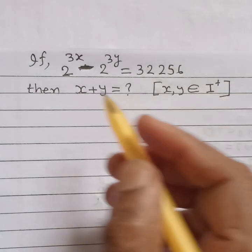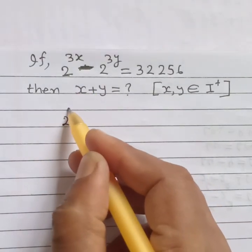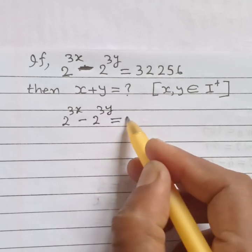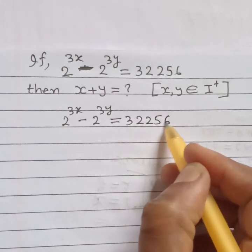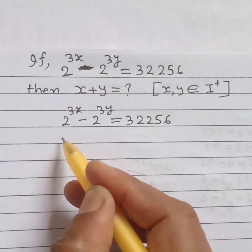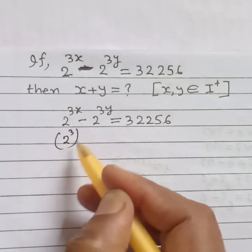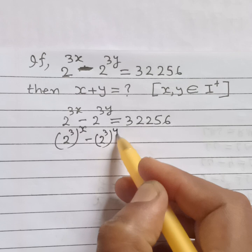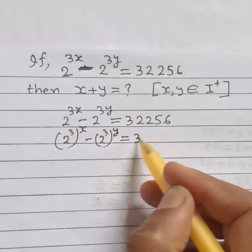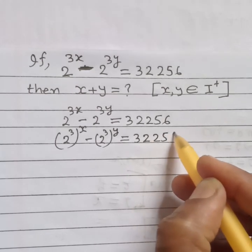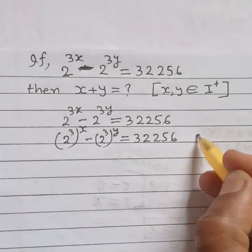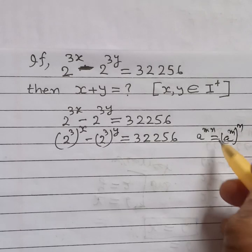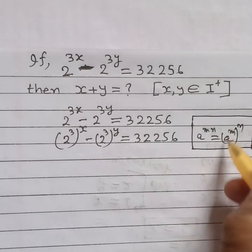Solution: given 2 to the power 3x minus 2 to the power 3y is equal to 32256. This can be rewritten as 2 to the power 3 to the power x, minus 2 to the power 3 to the power y, equals 32256. We apply the law of indices: a to the power m·n equals a to the power m, whole to the power n.